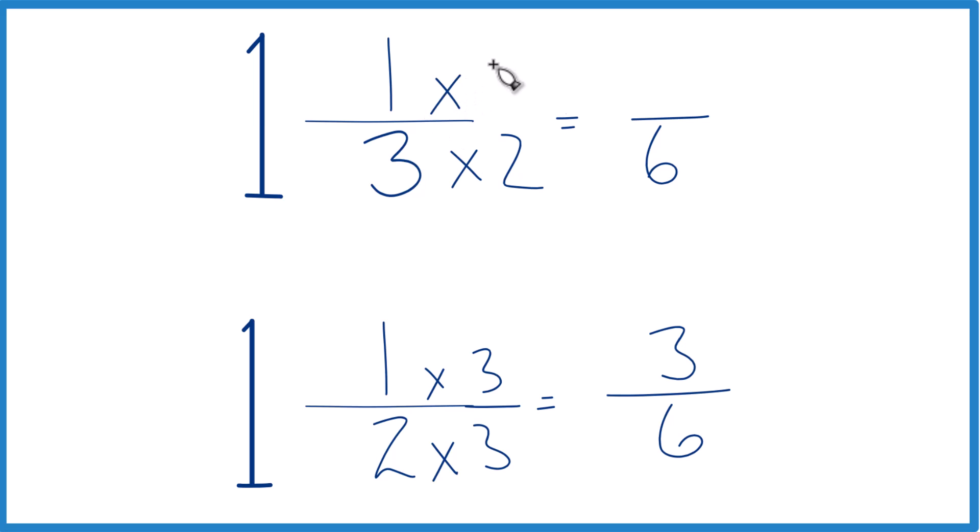Up here, we're going to multiply the numerator by 2. 1 times 2 is 2. And 2 sixths, that's equivalent to 1 third. Now, we have the same denominator.